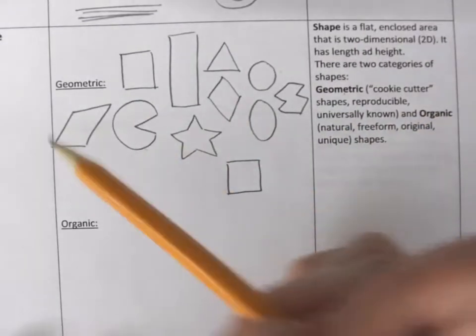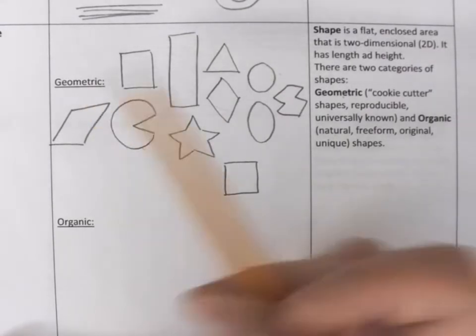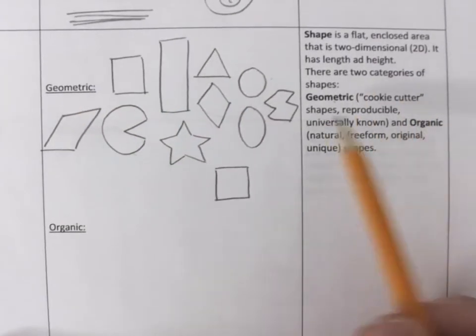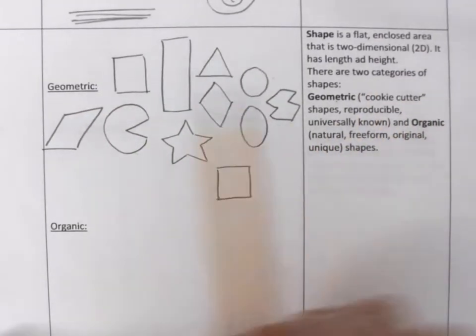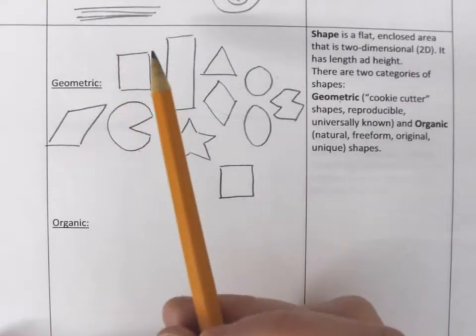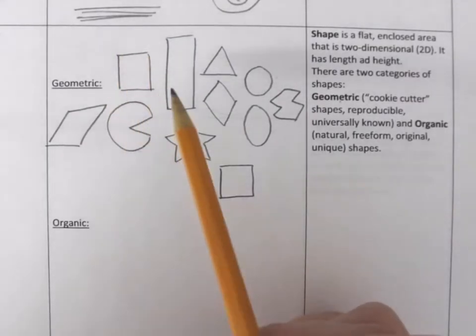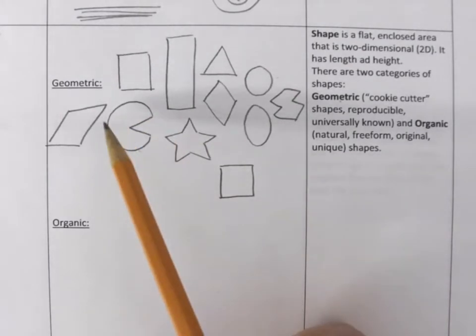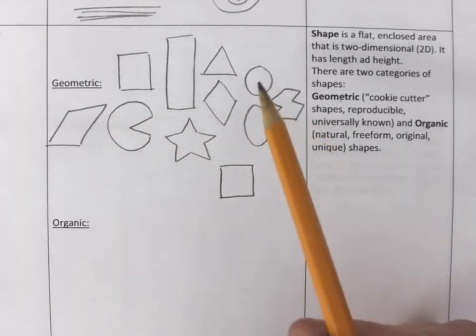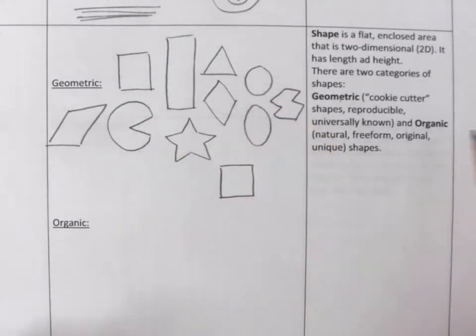we call this a shape. And we can have geometric shapes that are cookie cutter shapes, reproducible, universally known. They're usually made of angles and straight lines, sometimes a curved line, but a very unison, perfect curved line that makes something like a circle or an oval.